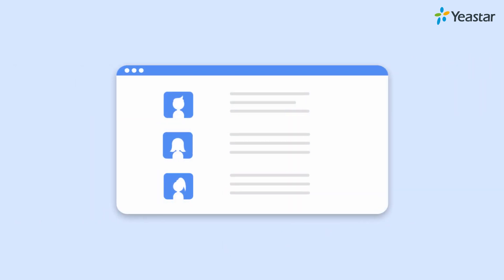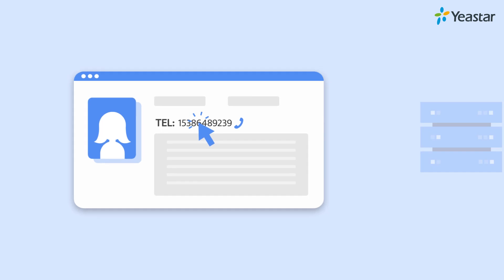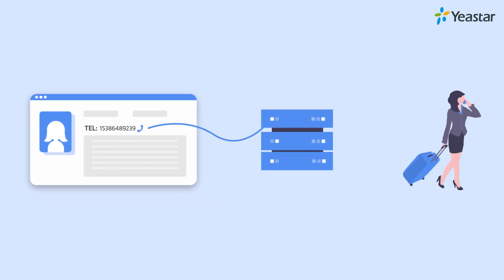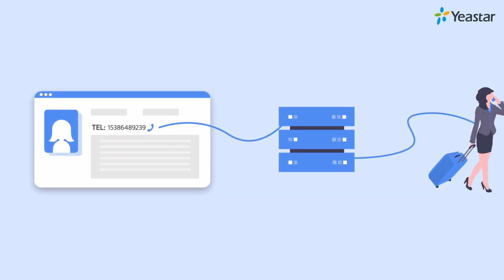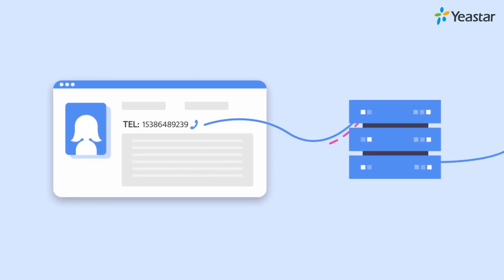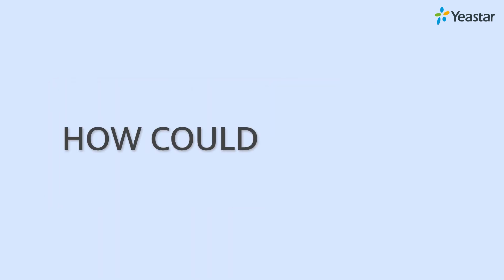If he tries to call a customer while looking through the contact info on the CRM, what he needs is simply clicking the number attached to call out. Did you see that? Two totally different systems are interacting with each other in a quite efficient way.